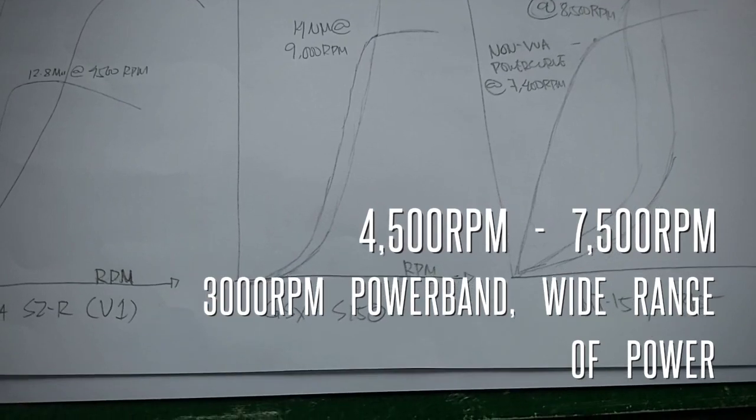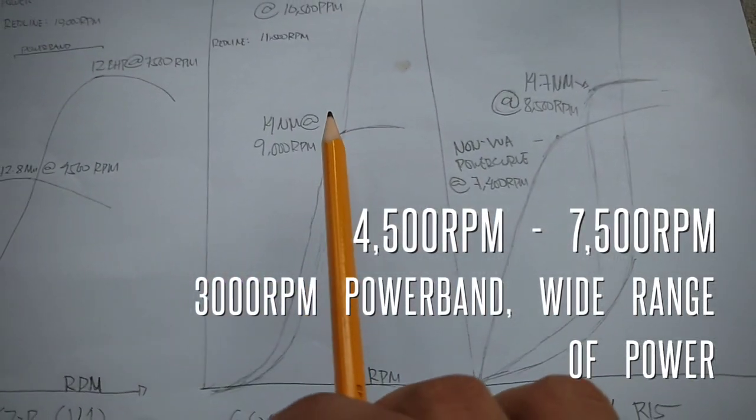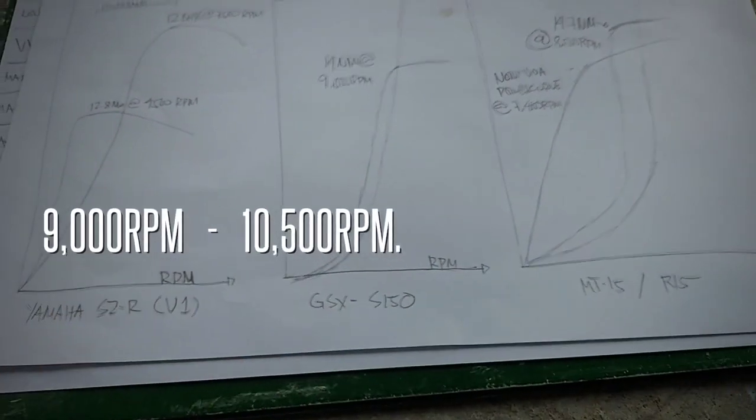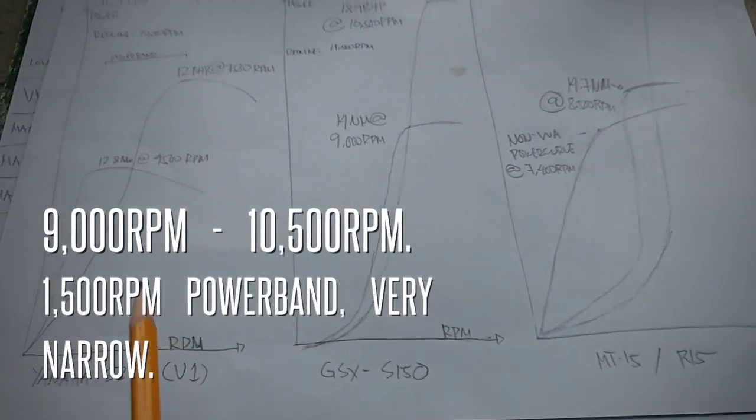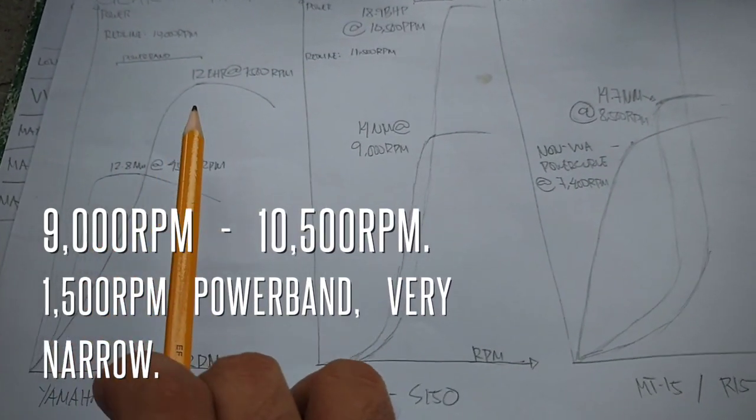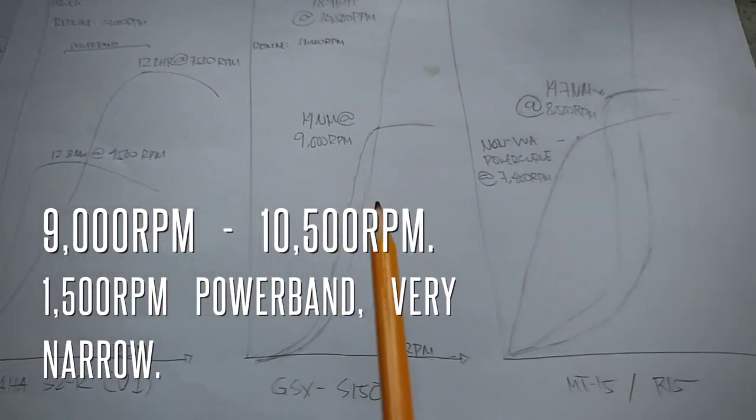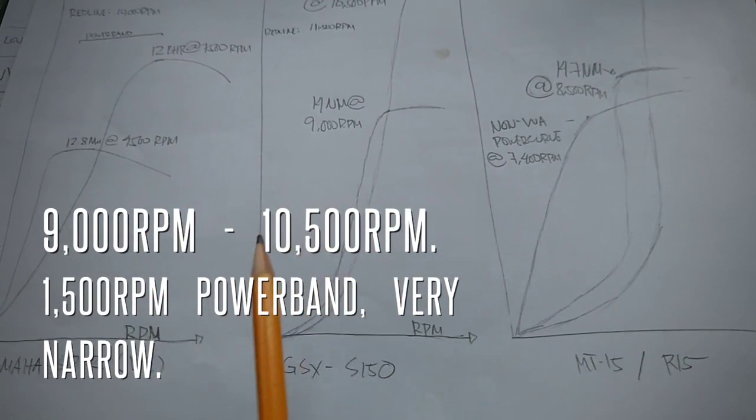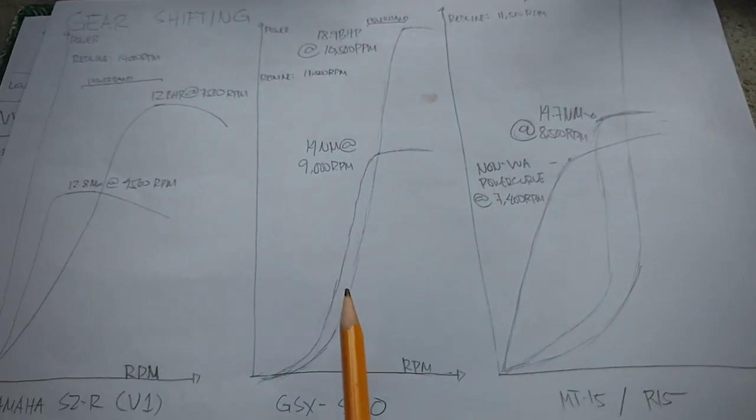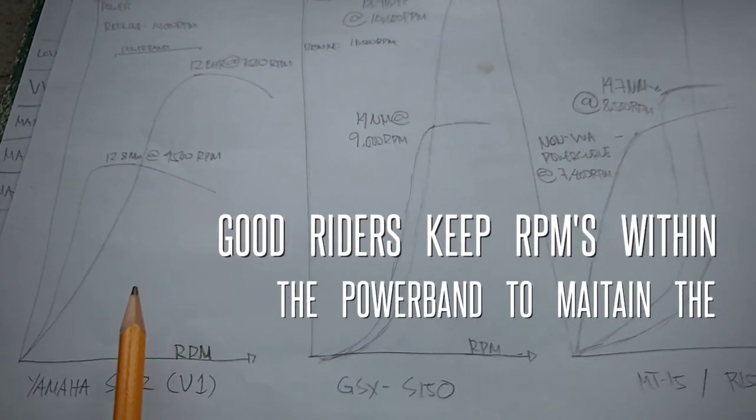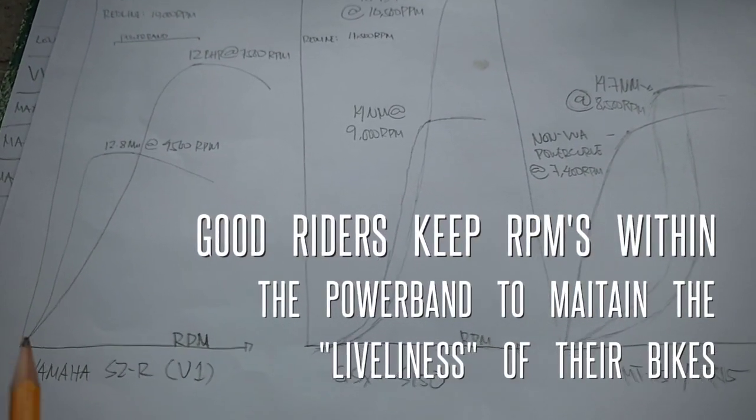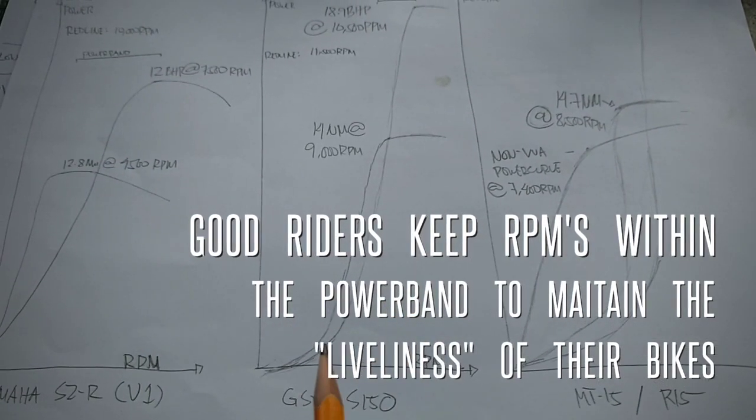Whereas kay GSX, ang power band naman niya magsisimula sa 9,000 RPM all the way to 10,500 RPM. So already, makikita niyo yung difference na kapag low revving yung motor mo, despite the lower power output, napakalapad ng power band. Whereas kay high revving na motor, despite napakataas ng output, napaka-narrow ng power band. So this means, mas madaling gamitin pang slow moving traffic, pang daily, or pang beginner si Yamaha SZ kumpara kay GSX.